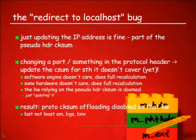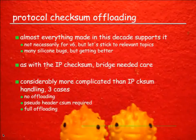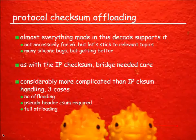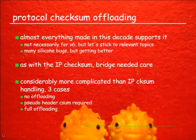The result is that protocol checksum offloading is disabled on that class of hardware for at least 10 years now. That unfortunately means EM, BGE, and BNX - which is about 99% of the server market. Almost everything made this decade has offloading support - not necessarily for IPv6 but let's stick to relevant topics. Unfortunately there are quite a few silicon bugs. The most spectacular we ran into lately: an Intel 10GE card, when you enabled protocol checksum offloading - which should only touch TCP and UDP packets - corrupted OSPF packets. It's not even supposed to touch them.